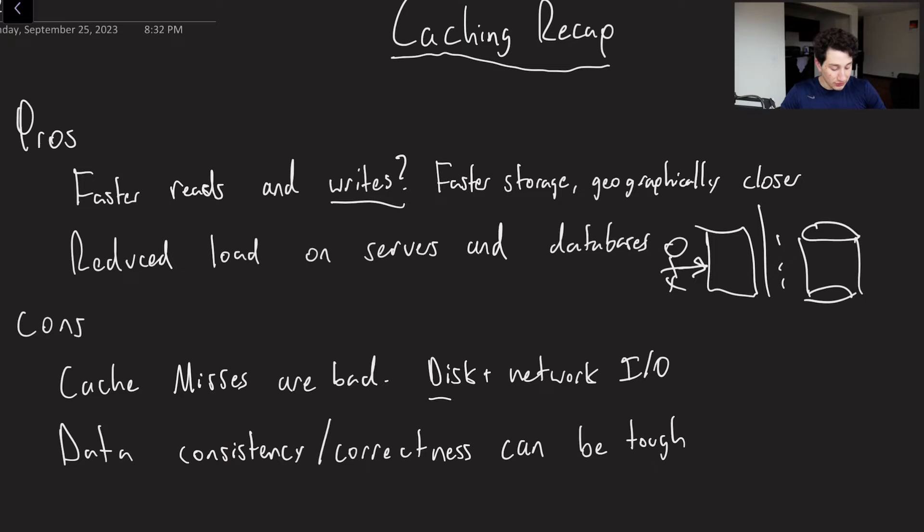So again, there's extra disk and network I/O there. Or instead of disk, sometimes maybe memory, if that's how we're choosing to implement our cache. Then the last thing is going to be that data consistency and correctness can be tough. Because we have more places to potentially read and write our data from and to, that is going to complicate things. And that's what we'll mainly be talking about today.